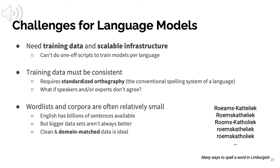When creating language models, beyond appropriateness questions, there are other challenges. First, you need training data in the target language. You also need scalable infrastructure — you can't do this one language at a time if you want to cover all 7,000 of the world's languages. You want infrastructure where you can ingest a text corpus and quickly train a language model and do evaluation. You also need to consider the consistency of the training corpus. Not all languages have a standardized orthography — they don't always have a standard set of spelling rules. There may be two sets, multiple sets, or no standard rules at all.